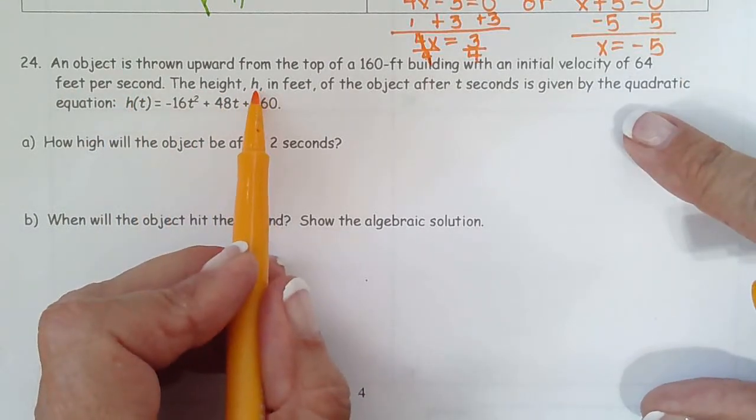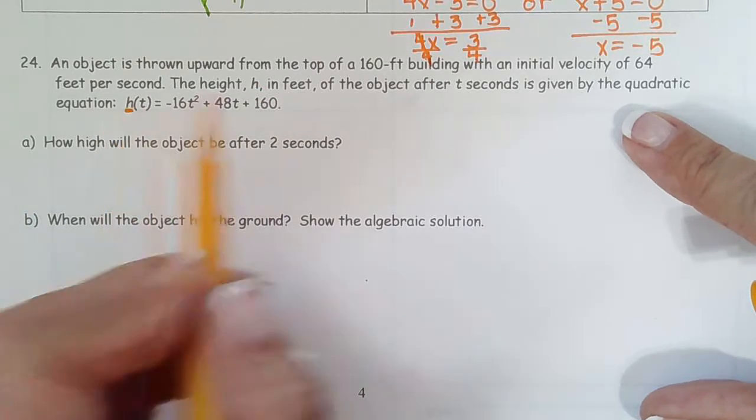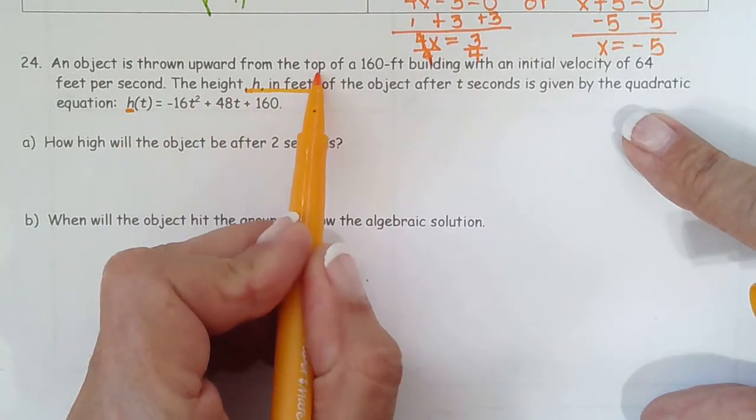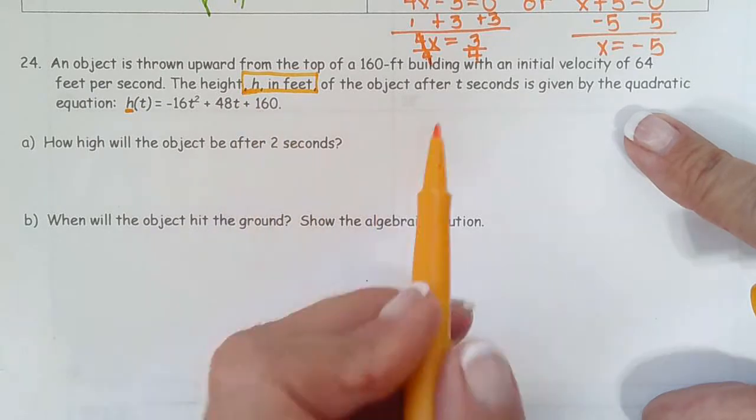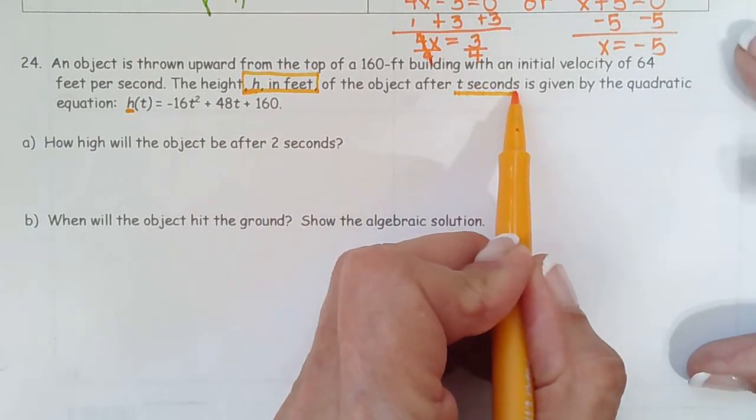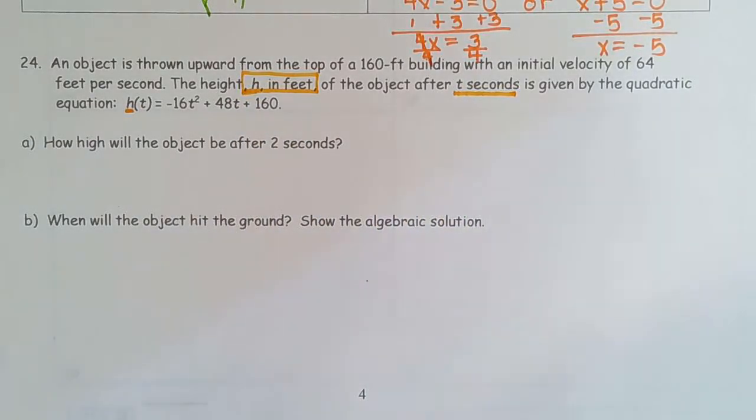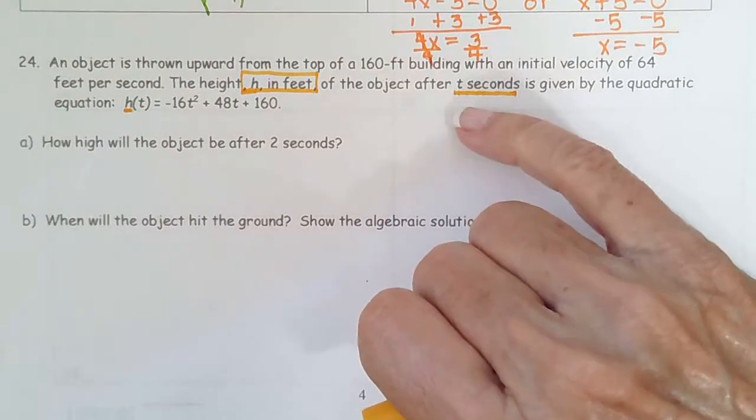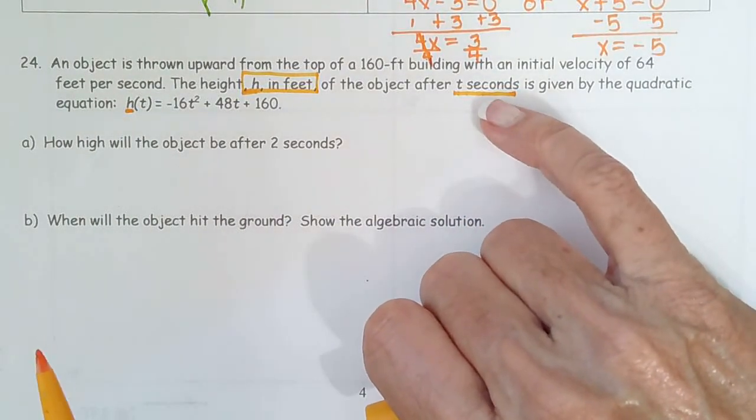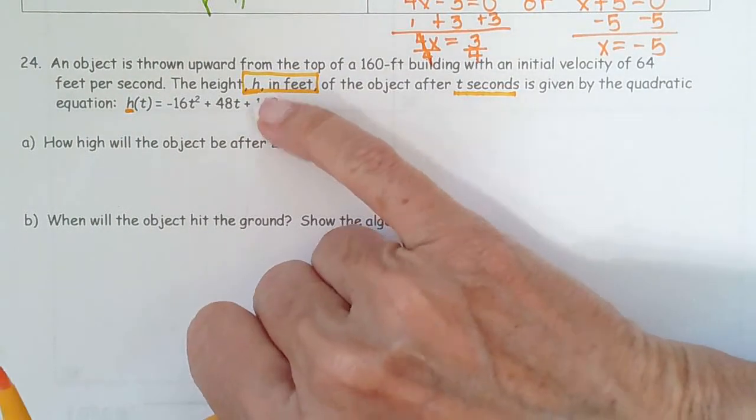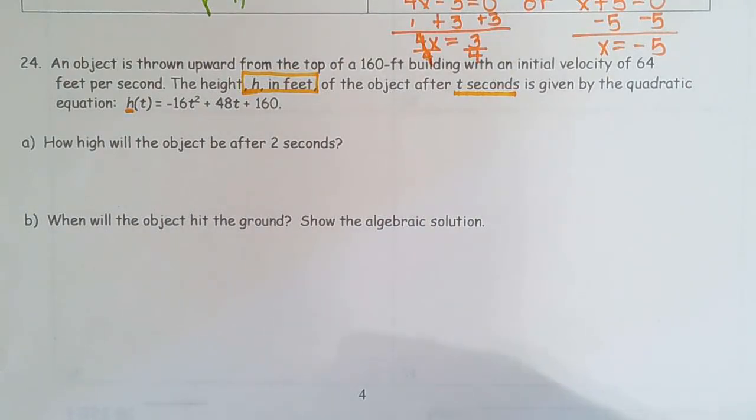So this one requires that we understand what the variables represent. So initial velocity of 64 feet per second. The height, h. So this is height in feet. So h represents feet of the object t seconds after t seconds. So we're throwing an object up in the air. So t tells us how many seconds it's been in the air. H tells us what's the height after those many seconds.